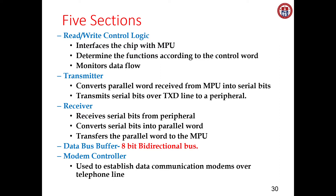The transmitter section converts the parallel word received from the microprocessor unit into serial bits and transmits those serial bits over the TXD line. We have two lines: TXD for transmitting data and RXD for receiving data. The TXD line is used for transmitting serial bits to the peripherals.